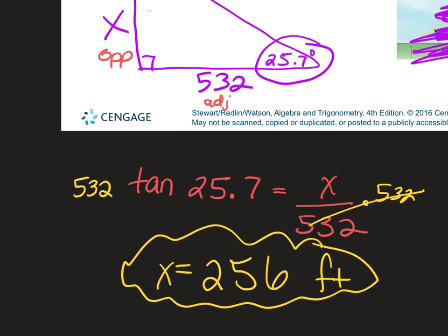Sometimes you'll get an answer that makes absolutely no sense, like negative 4.3 for a tree height. That tells you your calculator might be in the wrong mode. When I put my calculator in radians it came out to 338 — which is conceivable but wrong. Make sure your calculator is in degrees mode on your quiz. If you don't know how to change it, let me know — send a screenshot of your calculator and I'll tell you how.